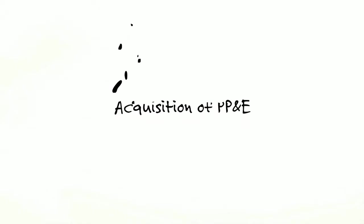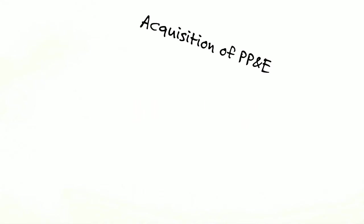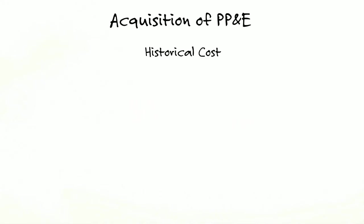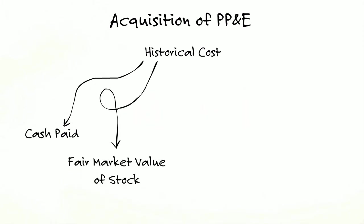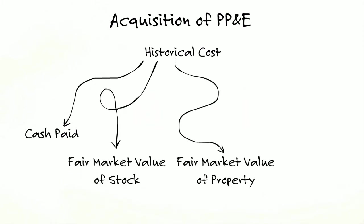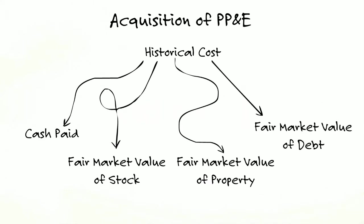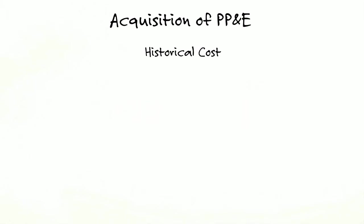When you buy PP&E, your initial acquisition includes your historical cost. Historical cost can consist of cash paid, fair market value of stock issued, fair market value of property issued, or fair market value of debt if you borrow money. It also includes all expenditures to get that asset ready for its intended use.